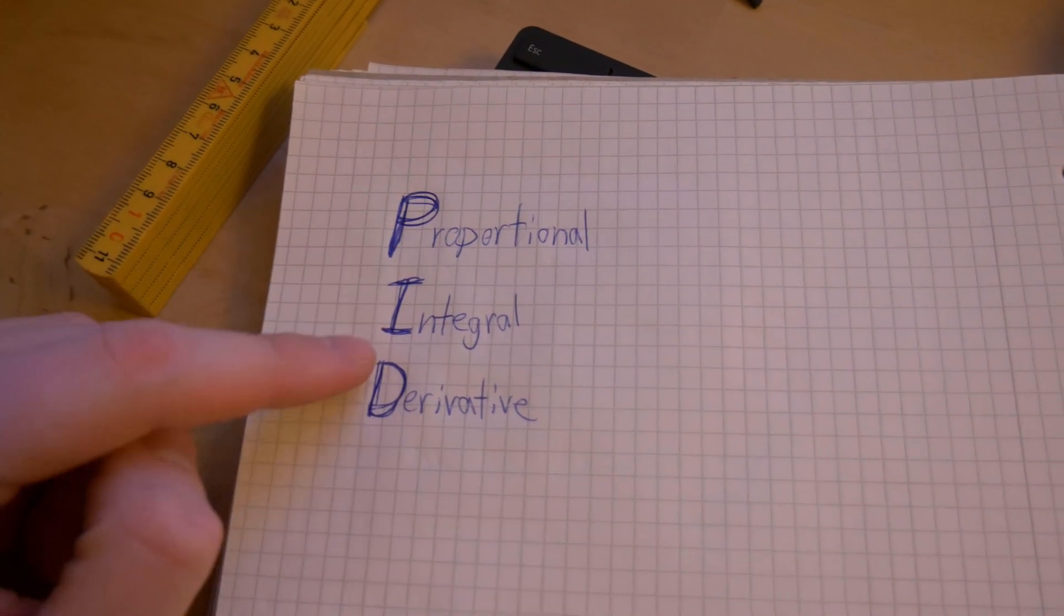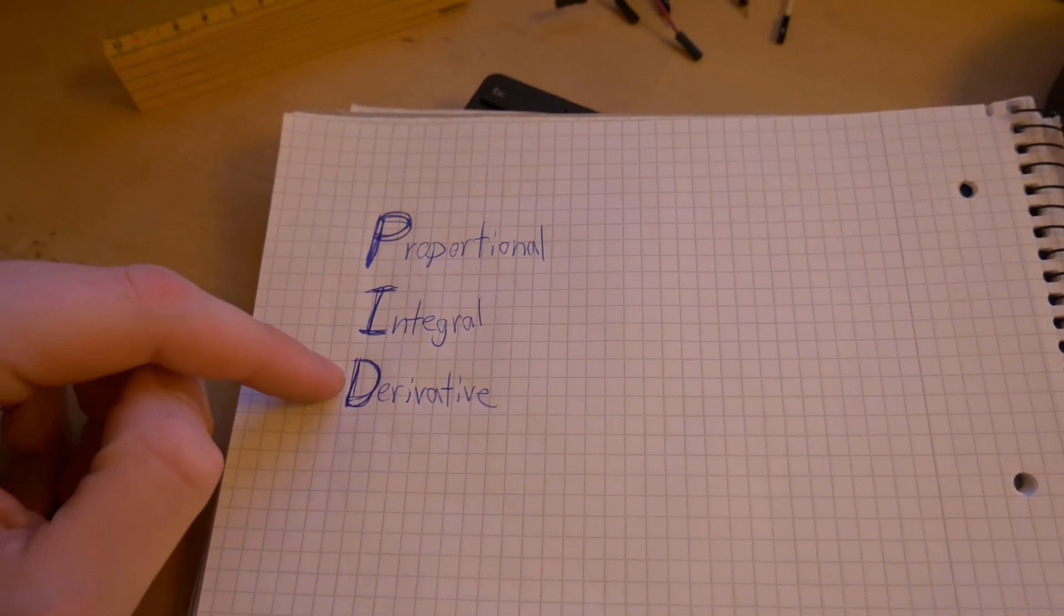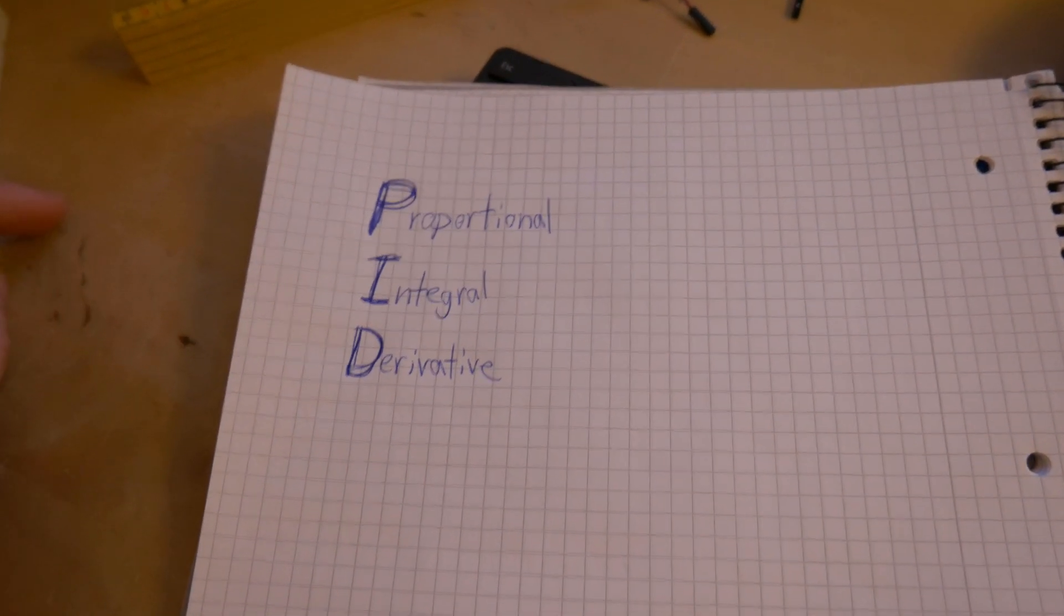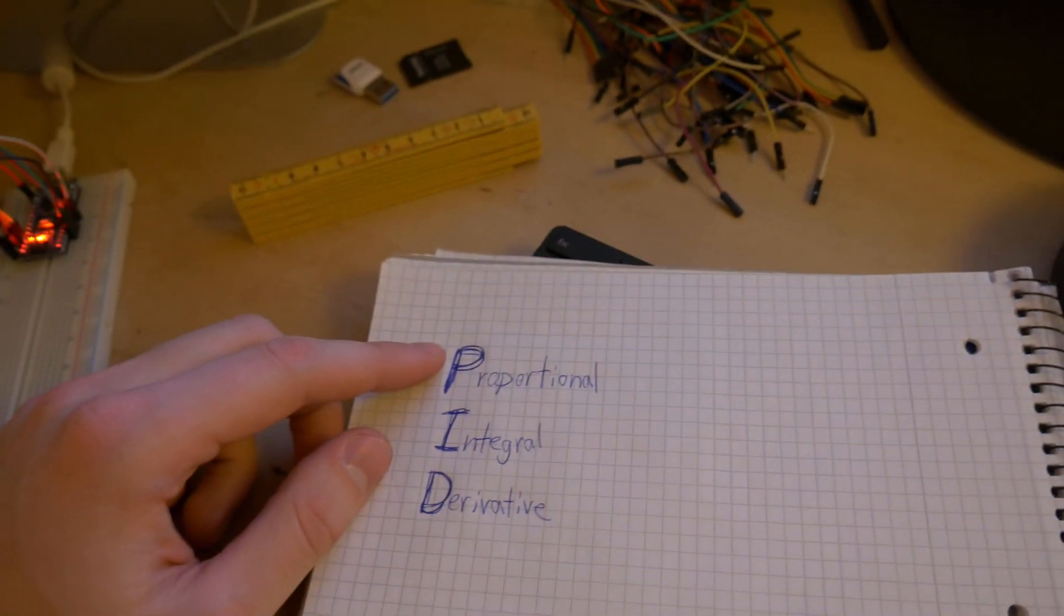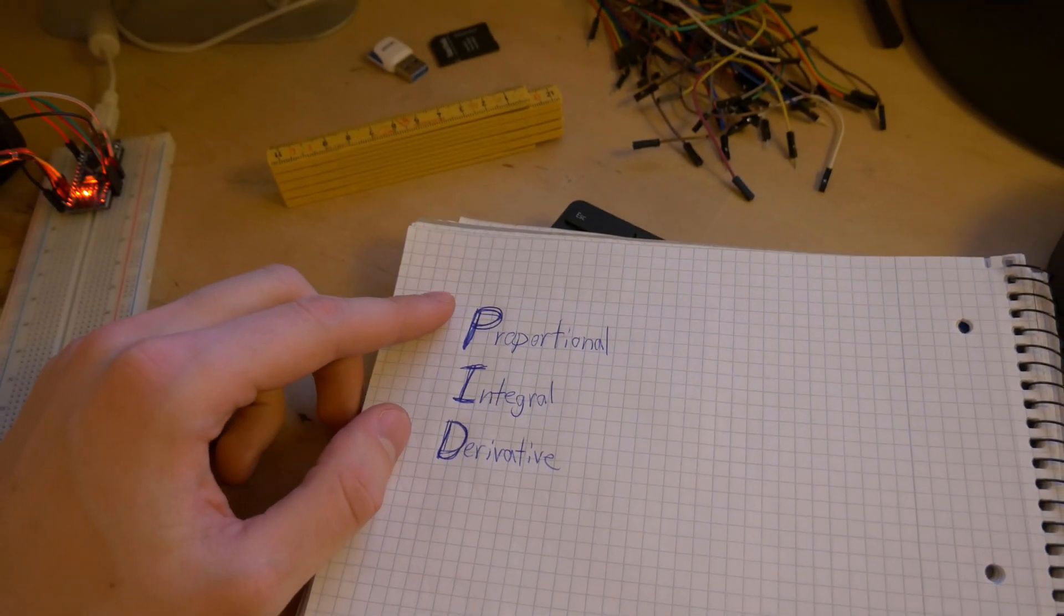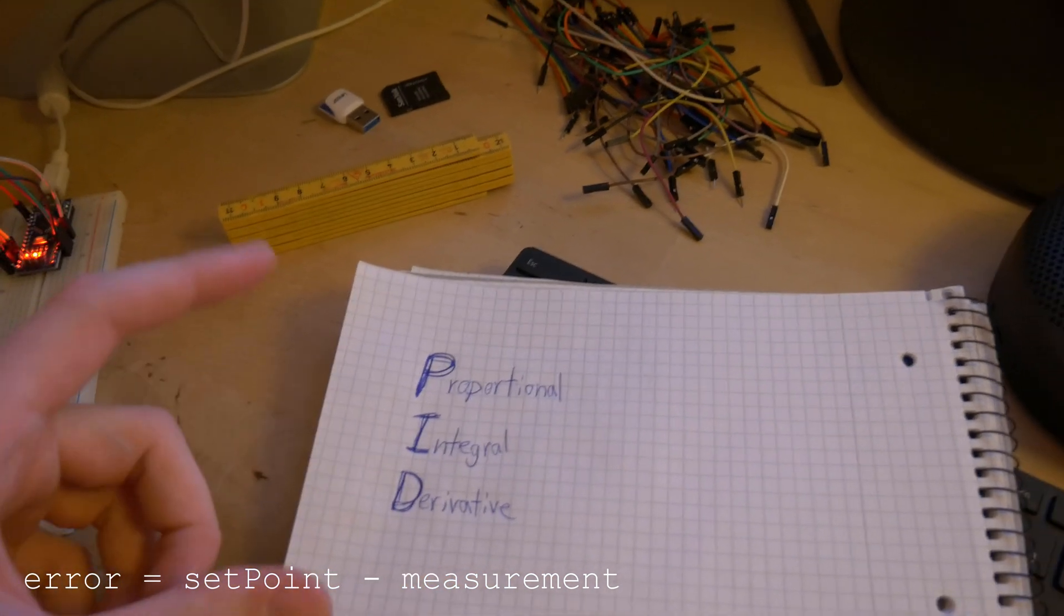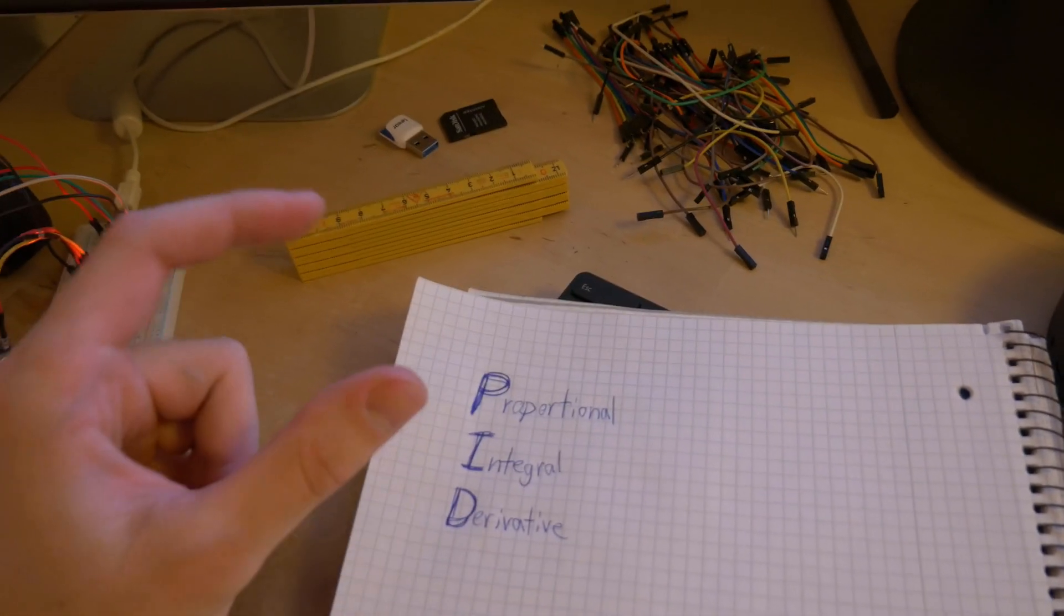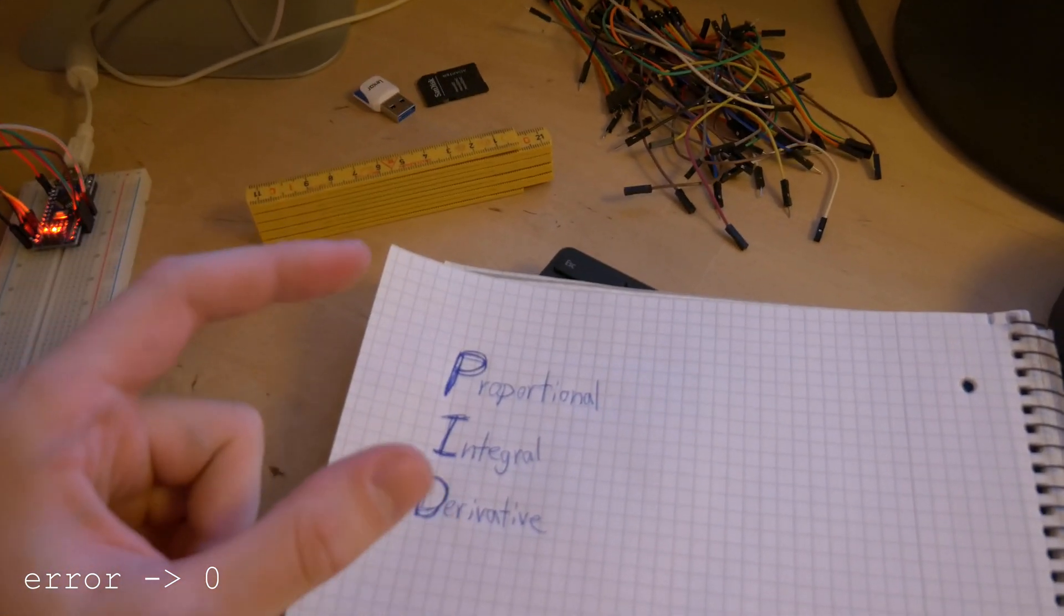PID control actually stands for proportional, integral, derivative. So what is this? Well, this is basically three different ways of controlling the system. When we talk about PID control, the goal of the system is to eliminate any error. So you basically have your set point and your measured value, and the goal is to as quickly as possible minimize the error to zero.